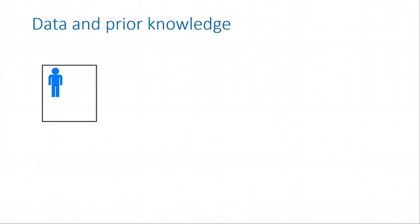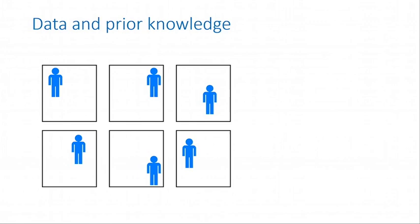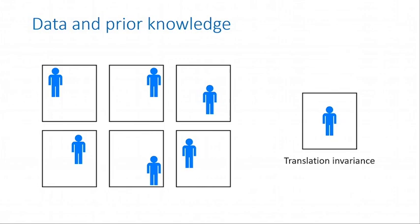Let's suppose we're trying to detect the presence of a person in an image. We know the presence or absence of a person doesn't depend on where they are in the image. With a naive approach, we'd need a very large dataset showing people at every possible location. But a smarter technique is to build in the assumption of translation invariance. If we bake that into the model as an explicit assumption, we only need examples where the person is centered in the image, and the system will automatically generalize to any other position — greatly reducing the data we need.